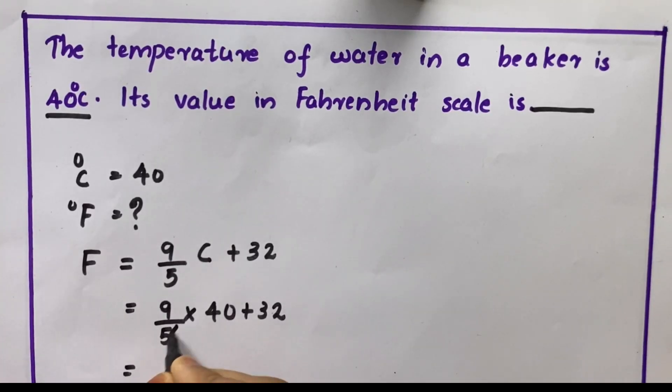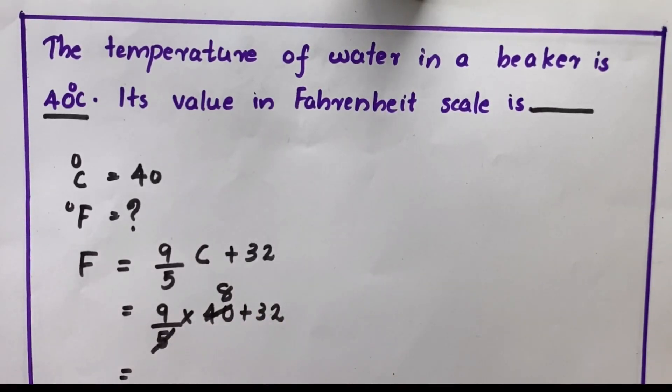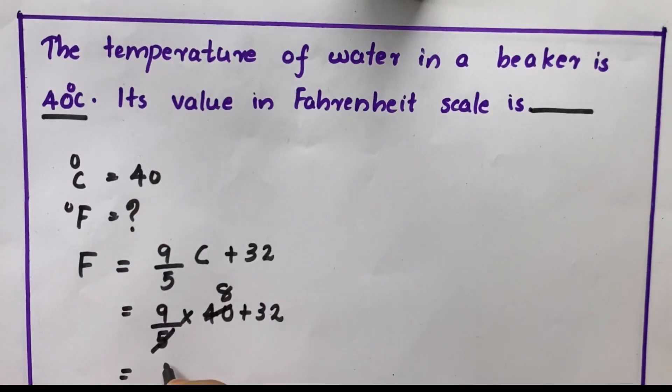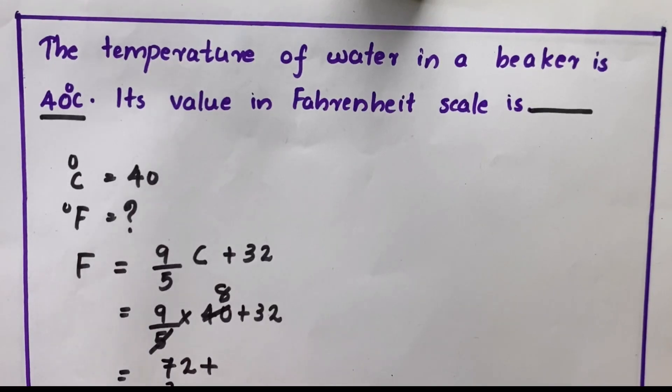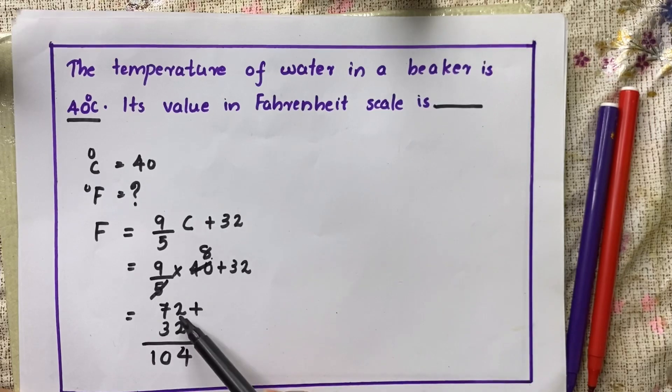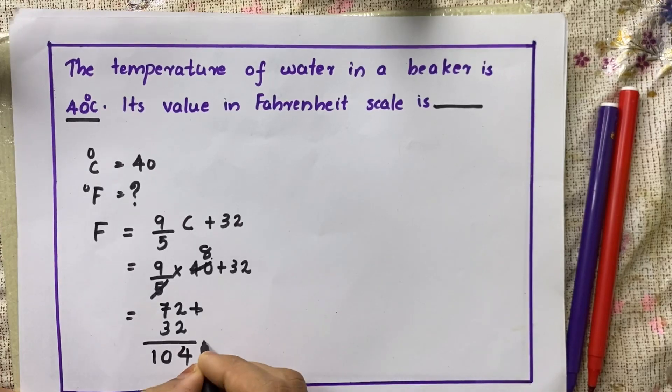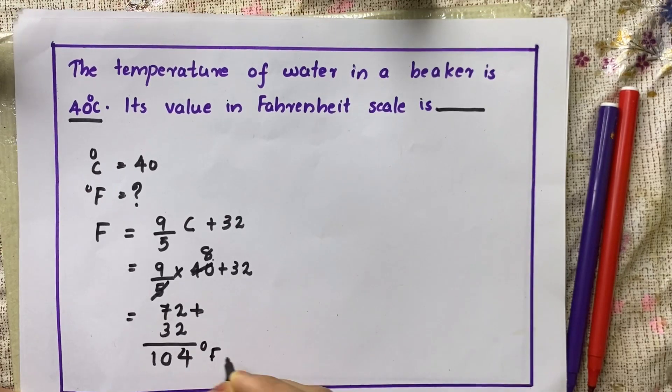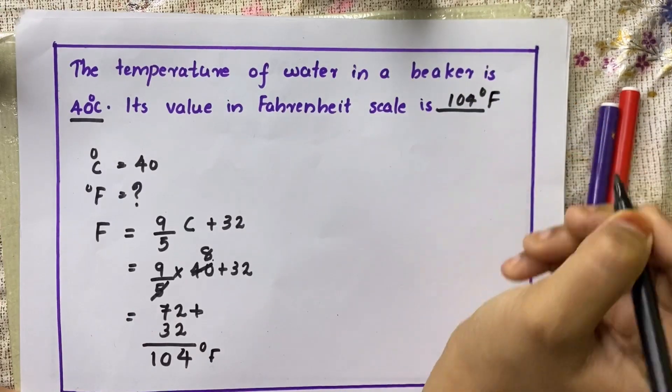That is equal to - we can cut this. We can cut this 40 by 5. 8 fives are 40, so 9 into 8 now. 72 plus the remaining is 32. So we have to add up, 2 plus 2 is 4, 7 plus 3 is 10. What is this? That much degree Fahrenheit. What is the answer then? Yeah, 104 degree Fahrenheit. We solved that question.